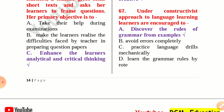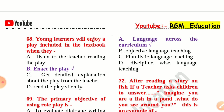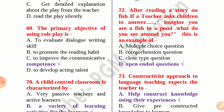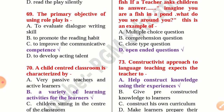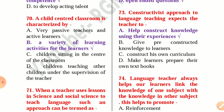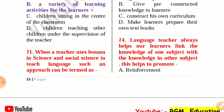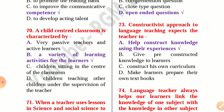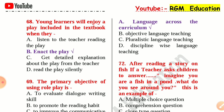Under the constructivist approach to language learning, learners are encouraged to discover the rules of grammar from examples. Question 68: Young learners will enjoy a play included in a textbook when they enact it — the primary objective of using role play is communicative competence. Question 69: A child-centered classroom is characterized by a variety of learning activities for the learners. Question 70: When a teacher uses lessons in science and social science to teach language, such an approach can be termed as language across the curriculum.